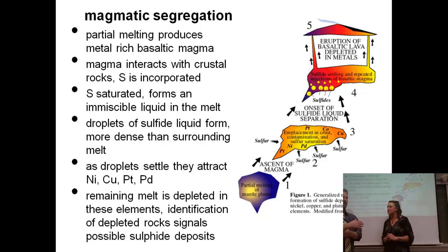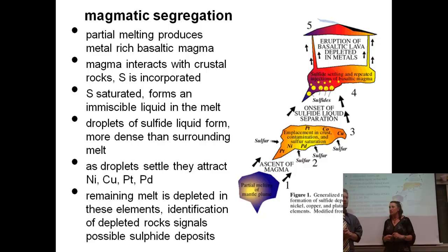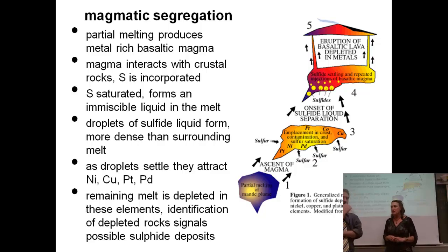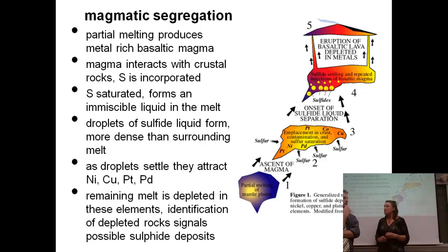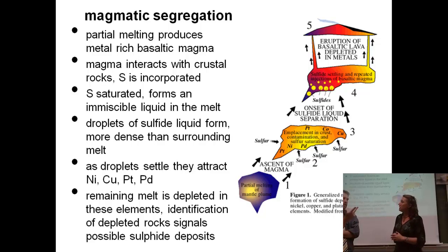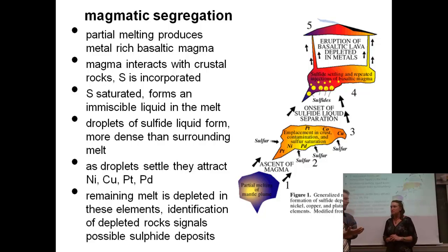Magmatic segregation — when I think of segregation, I think of separating things. Here we have the whole process broken down for what's happening inside the magma chamber. These give us deposits called VMS — Volcanic Massive Sulphide Deposits — which are the rich deposits we mine for cobalt, copper, nickel, and also the platinum group: platinum and palladium. In Volcanic Massive Sulphide Deposits, we start by partially melting some of the rock.